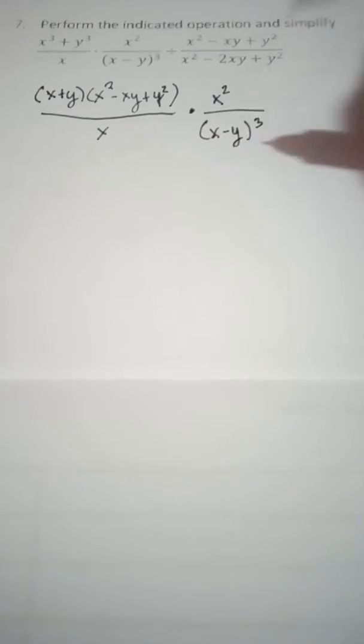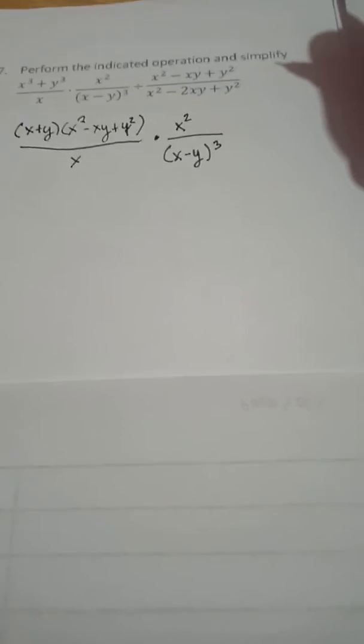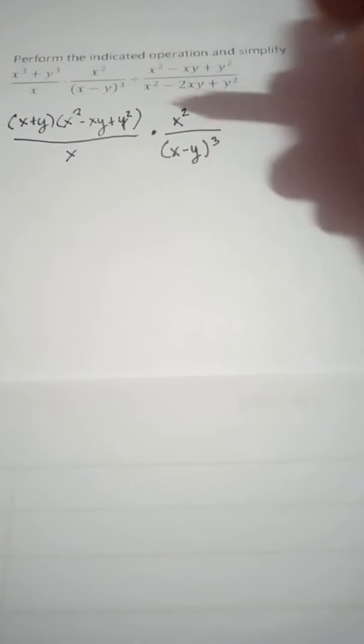so this cannot be factored, so you just write it, x minus y quantity cubed. Then, since this is divide, so you multiply the reciprocal.